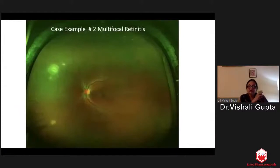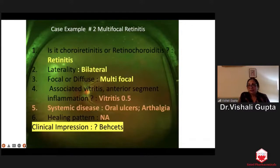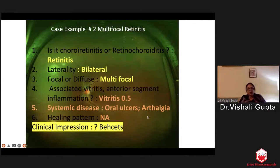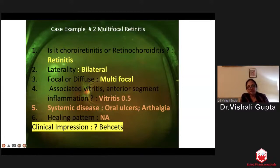Now the second case: multifocal retinitis. You have multiple retinitis patches — bilateral, multifocal, without much vitreitis. The patient has oral ulcers and arthralgia but no healing pattern yet. Bilateral multifocal retinitis with oral ulcers and arthralgia — what would you think of? You would not think of anything other than Behcet's. Someone suggests HLA-B51/52. However, Behcet's is a kind of emergency when you see these retinitis lesions. If you order HLA, it will take two to three weeks for the report. HLA is not even in the diagnostic criteria for Behcet's — the criteria are all clinical.